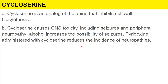Cycloserine is an analog of D-alanine that inhibits cell wall biosynthesis. It causes CNS toxicity including seizures and peripheral neuropathy. Alcohol increases the possibility of seizures. Pyridoxine administered with cycloserine reduces the incidence of neuropathy.